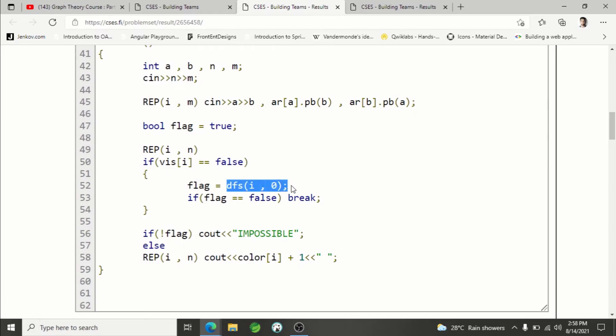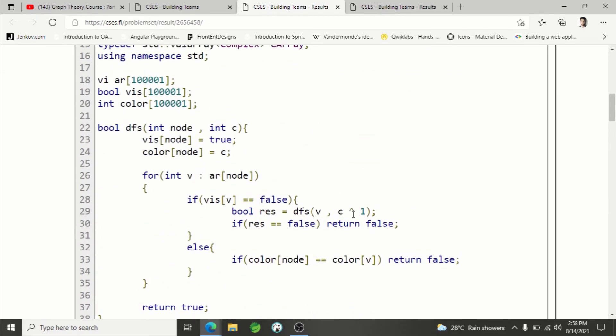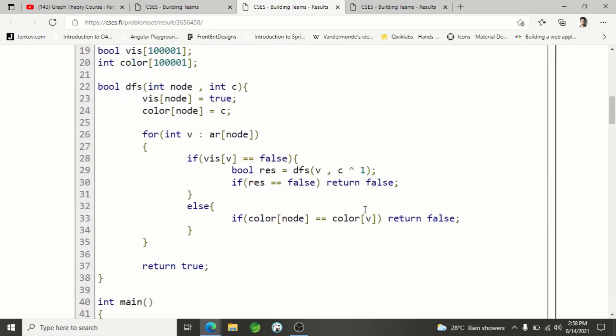If it is not bipartite, I'm simply breaking here. And if any of the single connected component is not bipartite, simply printing false. Otherwise, I'm running a loop from one to n and printing the color of each node. Usually we assign color in zero and one because I'm using XOR, and that's why I'm using color zero or one.